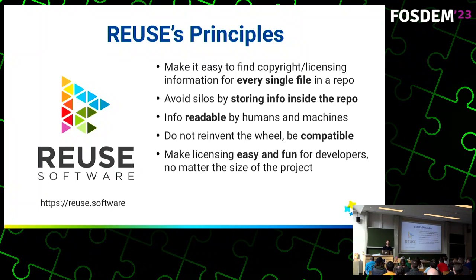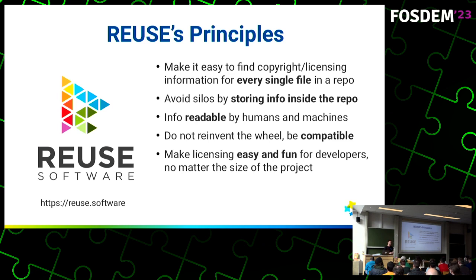ReUse is based on a couple of principles. Copyright and licensing information should be easy to find — it should be in the file it applies to, if possible. With binary files that's not possible, but with plain text it is. Silos should be avoided, and all licensing and copyright information should be stored in the repo, readable by humans and machines alike. We do not want to reinvent the wheel, so we try to be as compatible as possible. And licensing should be easy and fun.